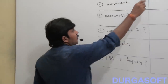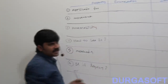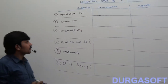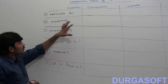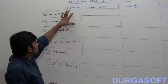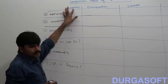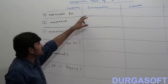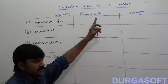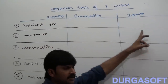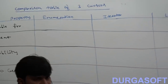Comparison table of three Java cursors. The first column is the property, then the first cursor enumeration, second one iterator, third one list iterator.